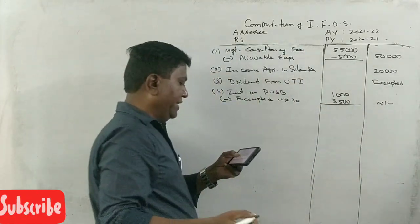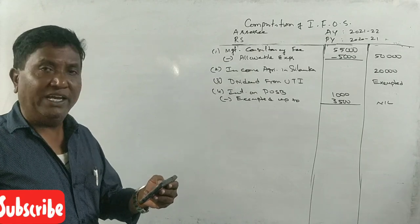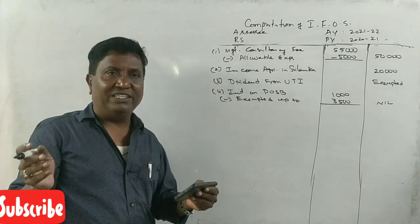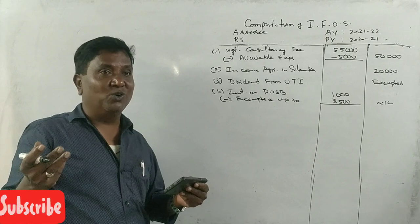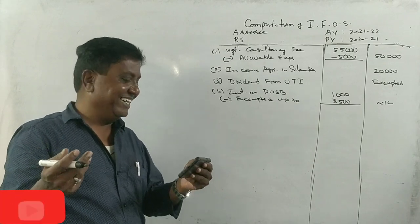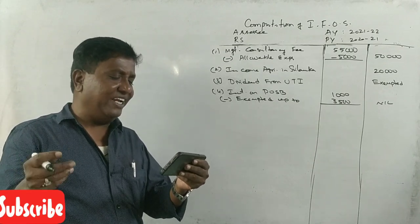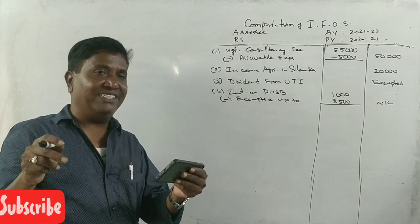Next point note, she holds the following investment. What's the question? 6,000 plus 3,000. What is the question? 1,00,000 9% tax-free commercial securities.